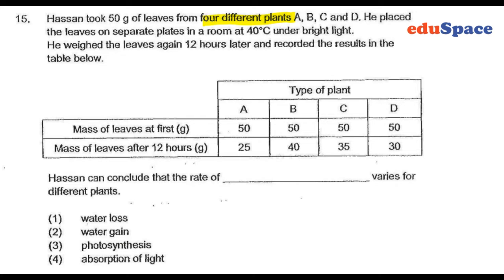We measure the mass — that's the measured variable here. In this case, we can clearly see that the mass of the leaves will drop for all the plants. That must mean water has left the leaves through the stomata during transpiration.